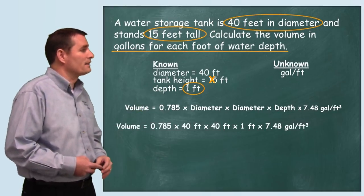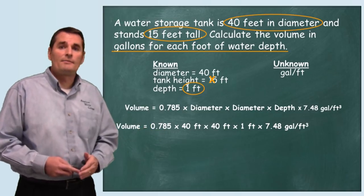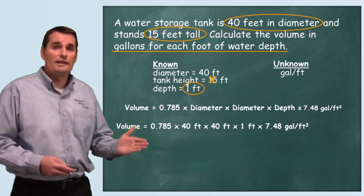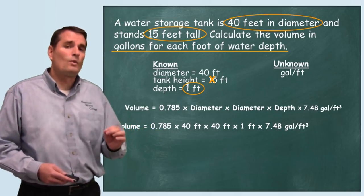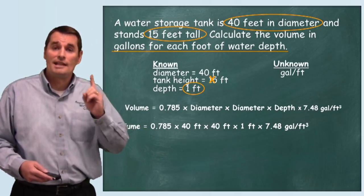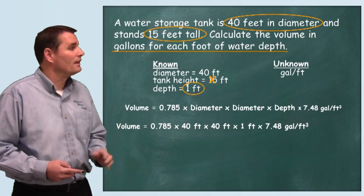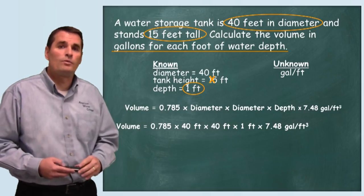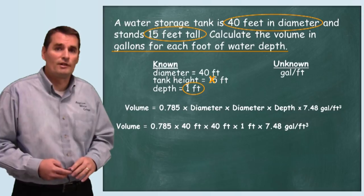Now when we plug our numbers in: 0.785 times the diameter twice which is 40 times the depth which is one foot. Remember we don't use the 15 feet because we're only looking for how many gallons in one foot of tank depth, times our unit conversion of 7.48 gallons per cubic foot.